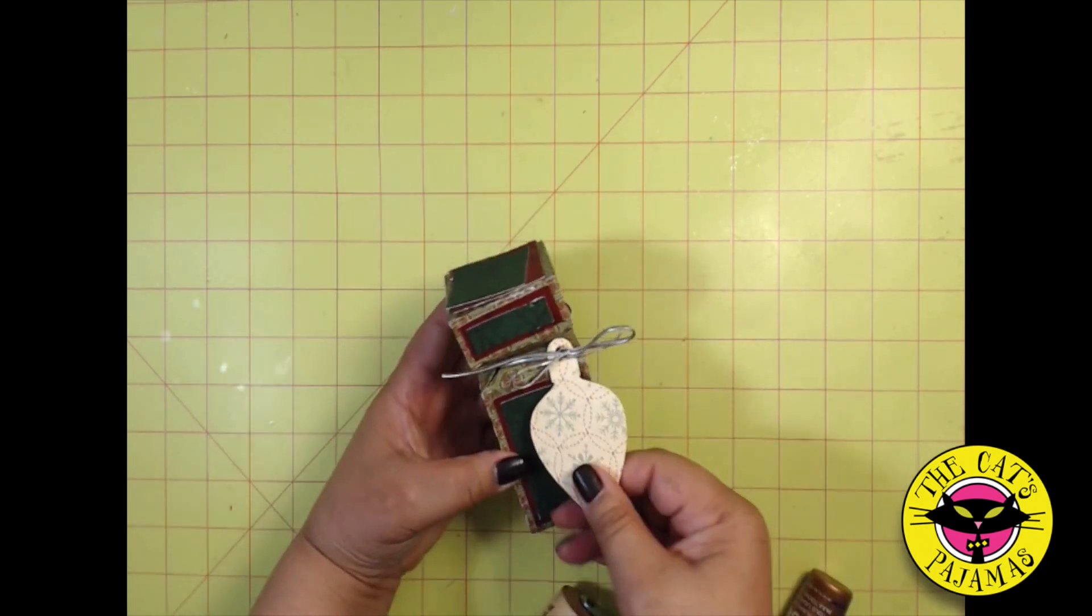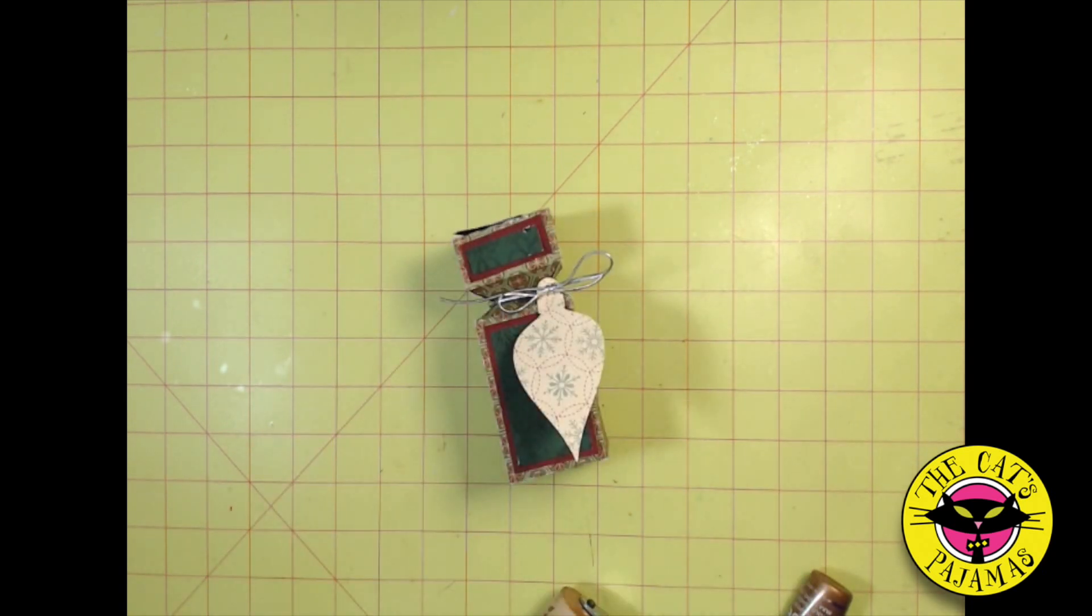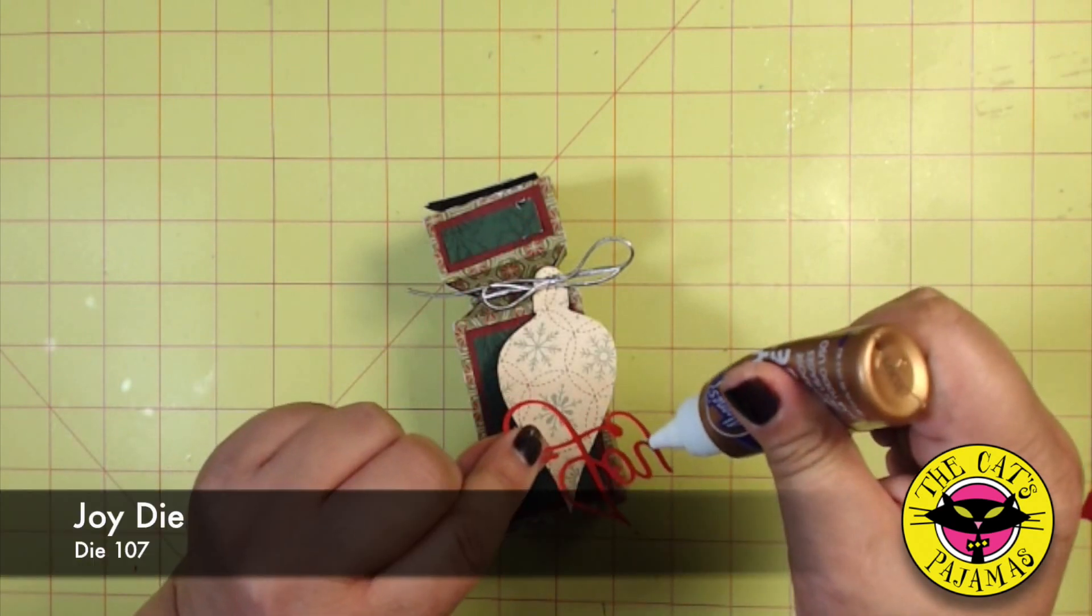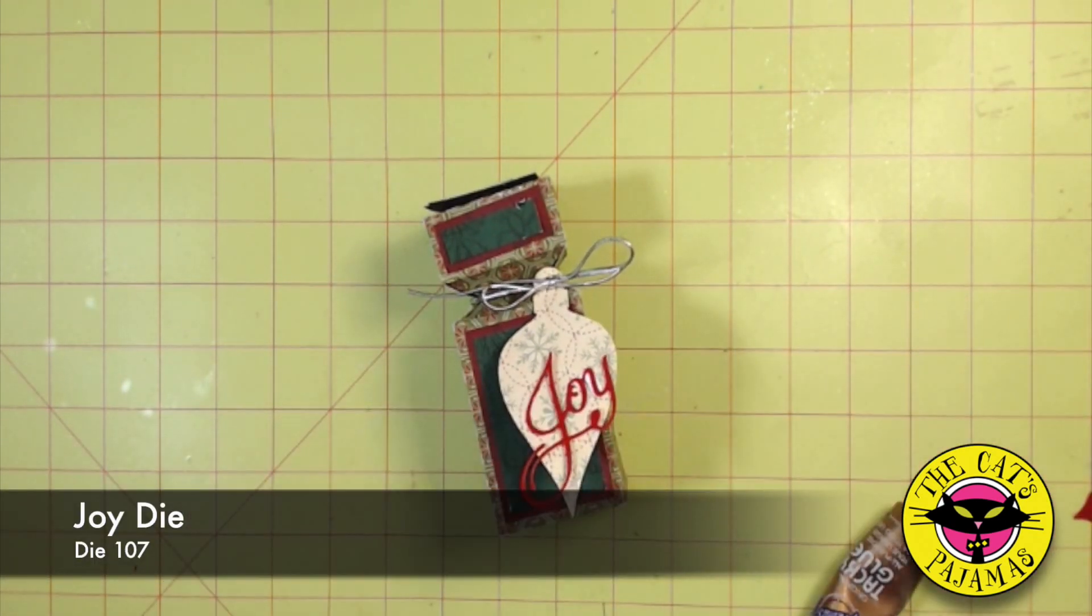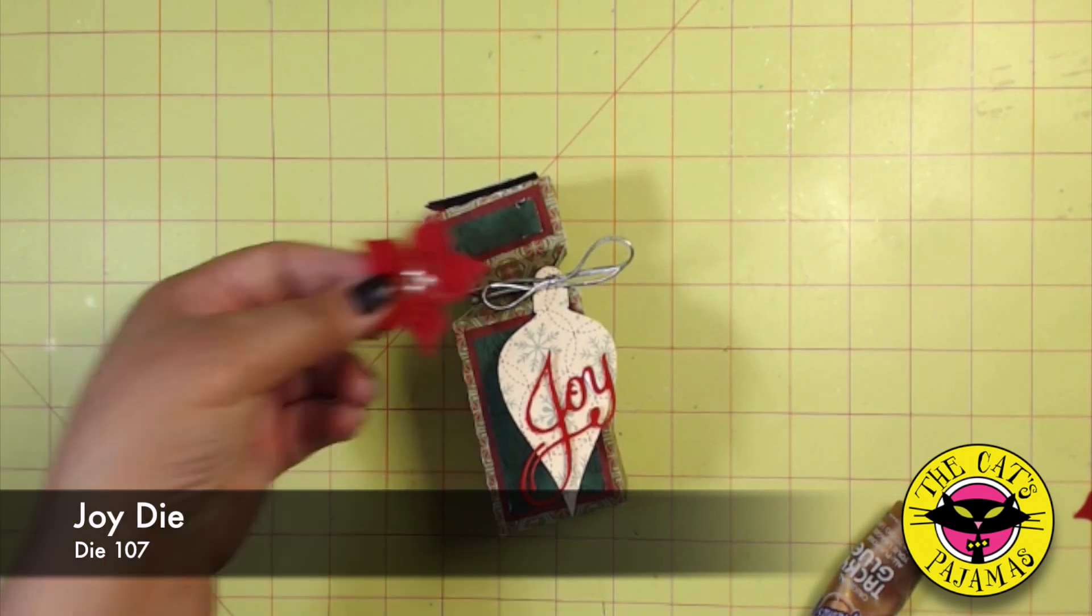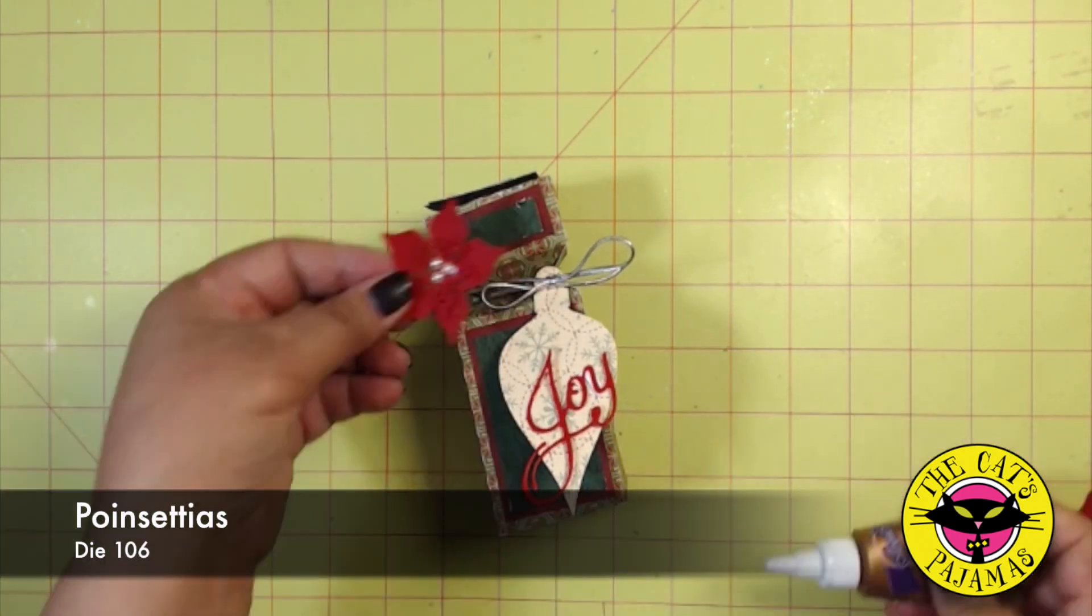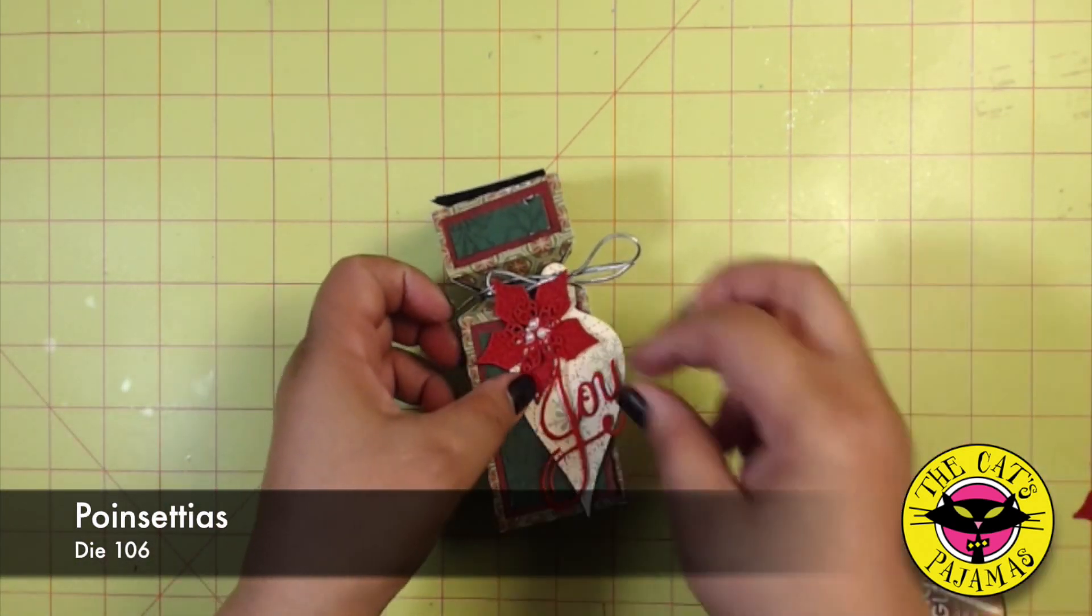And we'll just decorate the ornament. I think I want to do it kind of similar to the cracker. Add a little joy die cut. And a little poinsettia. And I think that's it.